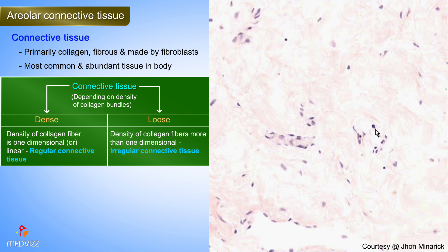This is a classical example of areolar or loose connective tissue. Before we close — do you feel that you can identify absolutely everything within connective tissue? If the answer is yes, then we have fulfilled our mission, and that's what we plan on doing with all of these slides.